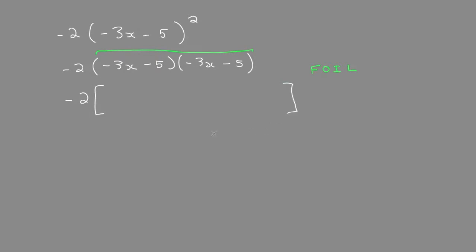We'll make big brackets and fill this in. First is negative 3x times negative 3x. Outside is negative 3x times negative 5. Inside, last.